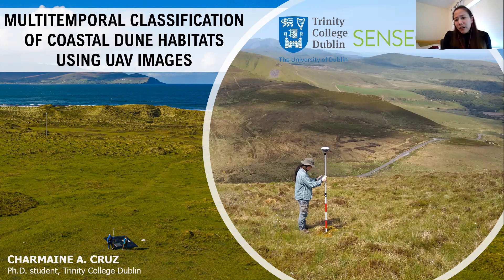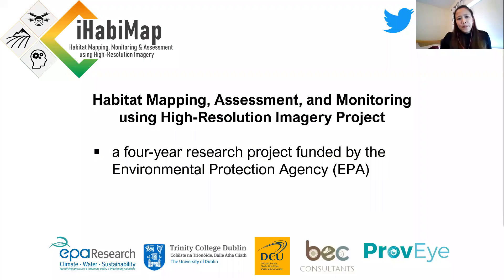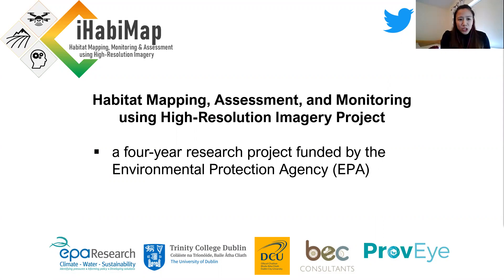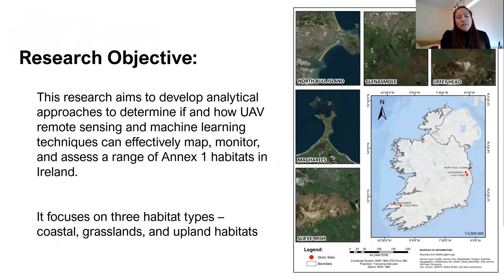This topic is part of the first objective of my research. My PhD topic is part of the ongoing research project called iHABIMAP, or Habitat Mapping Assessment and Monitoring using high-resolution imagery. It is a four-year research project funded by the EPA or Environmental Protection Agency, and it is a multidisciplinary project from the fields of remote sensing, ecology, machine learning, and geography. The overall aim of my research is to develop analytical approaches to determining if and how UAV remote sensing and machine learning techniques can effectively map, monitor, and assess Annex 1 habitats here in Ireland.